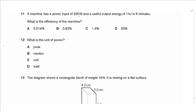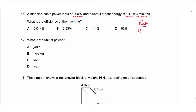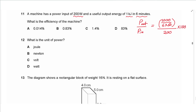Question 11: a machine has a power input of 200 W and a useful output of 1000 J in 6 minutes. Efficiency = (power output / power input) × 100. Power output = 1000 J / (6 × 60 s). Dividing that by 200 W and multiplying by 100 gives approximately 1.4%. So the answer is approximately 1.4%.